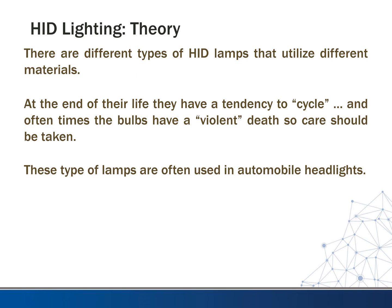At the end of their life, these types of lights have a tendency to cycle, and oftentimes the bulbs have a violent death. Care should be taken when using these types. If you can get a glass lens or something, that's probably a good idea, especially for the recessed can type using canopies, because when they do die, the bulb will often bust itself and it could make a mess or be hazardous. This is also the type of lamp often used in automobile headlights.